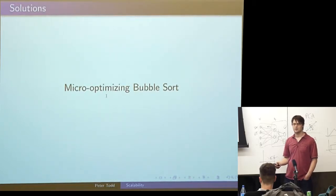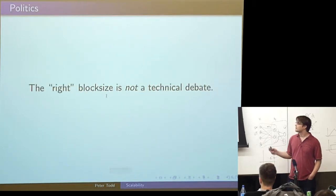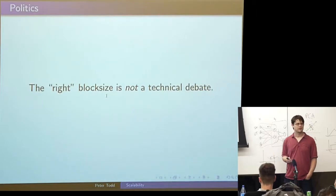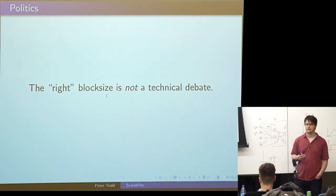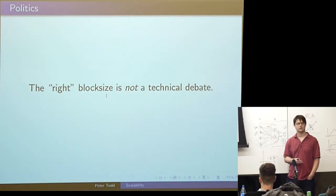You know, we might be able to make bitcoin run at 10 times transaction volume, 100 times, but at some point it's going to break down. At some point you run into this fundamental scaling issue. The other issue is this isn't really a technical debate. It's in part a technical debate in that there's certainly technical aspects to what the tradeoffs are, but how you determine what tradeoffs you follow is ultimately political.